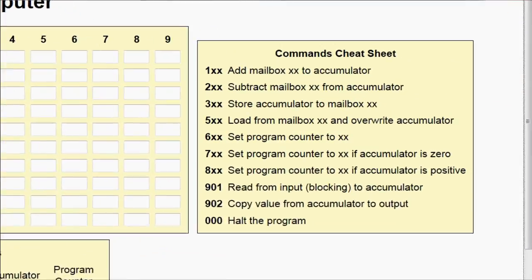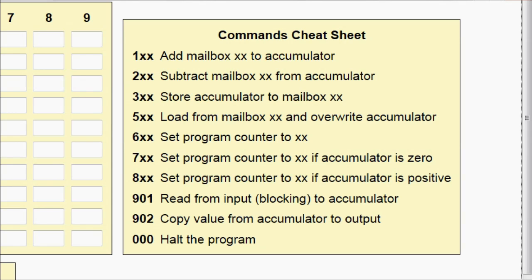All the boxes we've just described can hold a number — in fact, a number from 0 to 999, so basically three-digit numbers. Interestingly, all these numbers can represent data or instructions. How does a number represent an instruction? As it turns out, all the instructions are three-digit codes. The first digit tells you what the operation is, and the next two digits indicate which mailbox you should refer to.